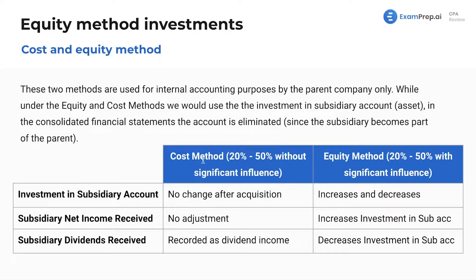As mentioned, we've got between 20% and 50% ownership and we also have significant influence. What's the cost method versus the equity method? These two methods are used for internal accounting purposes for the parent company only — the company investing in the other company, owning 20% to 50%. Under the equity and cost methods, we use the investment in subsidiary account.